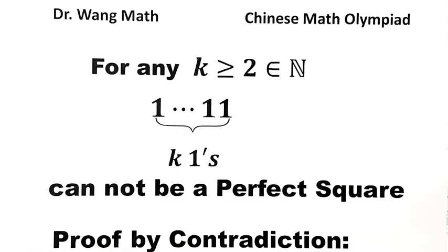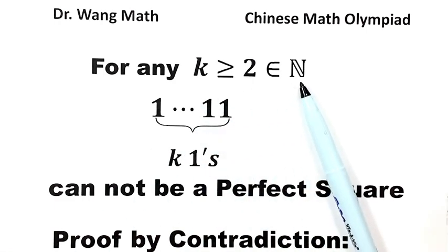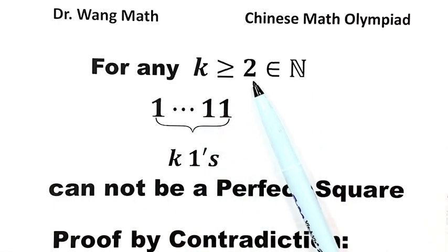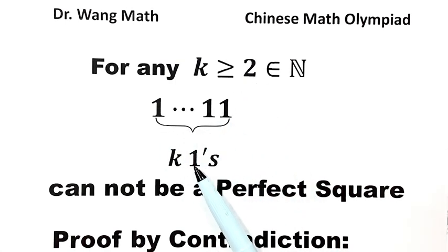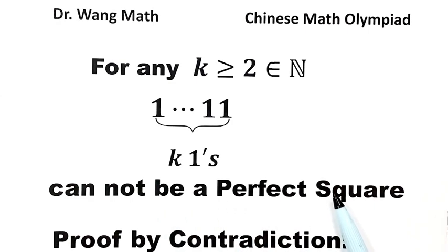In this video, we solve a question from the Chinese Math Olympiad. For any k which is a natural number bigger than or equal to 2, the number consisting of k ones cannot be a perfect square. Our task is to prove this statement.